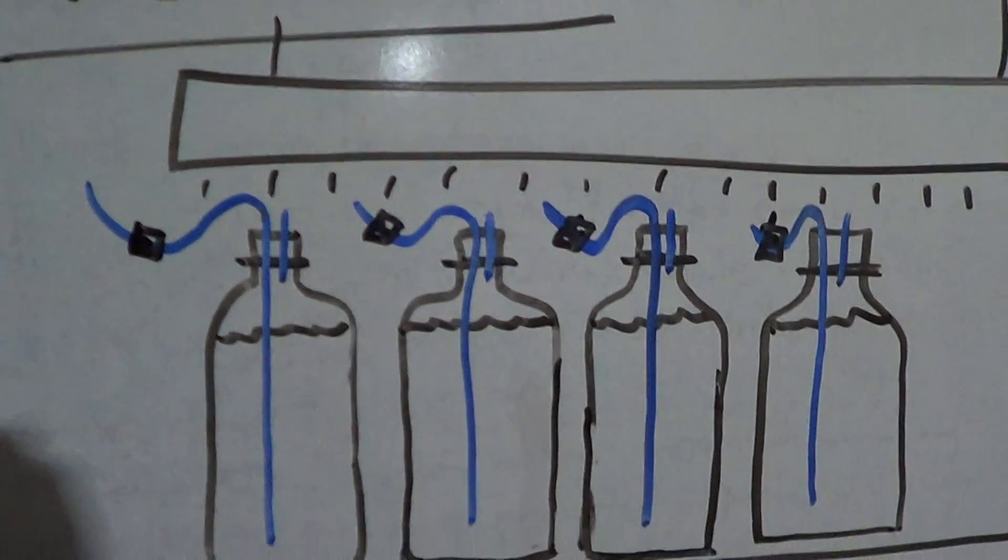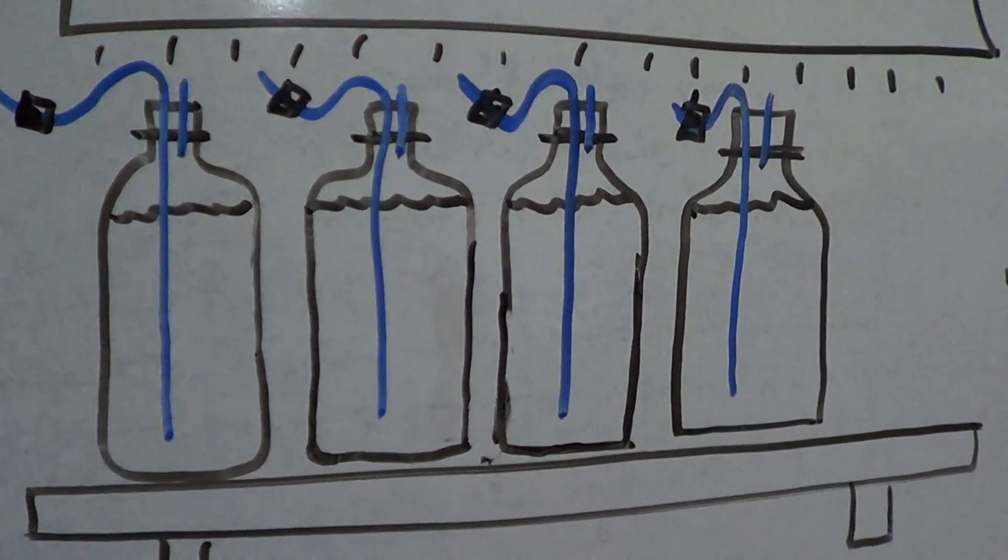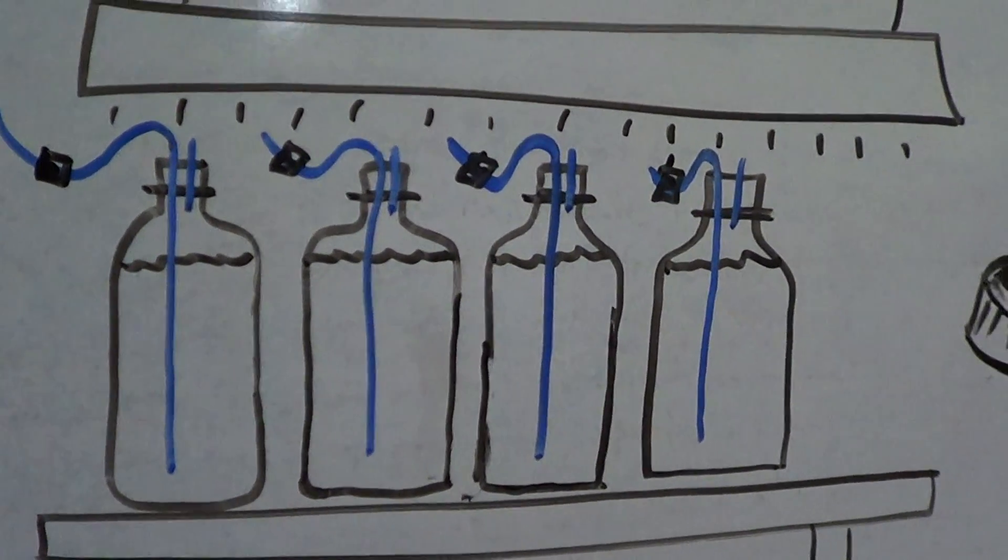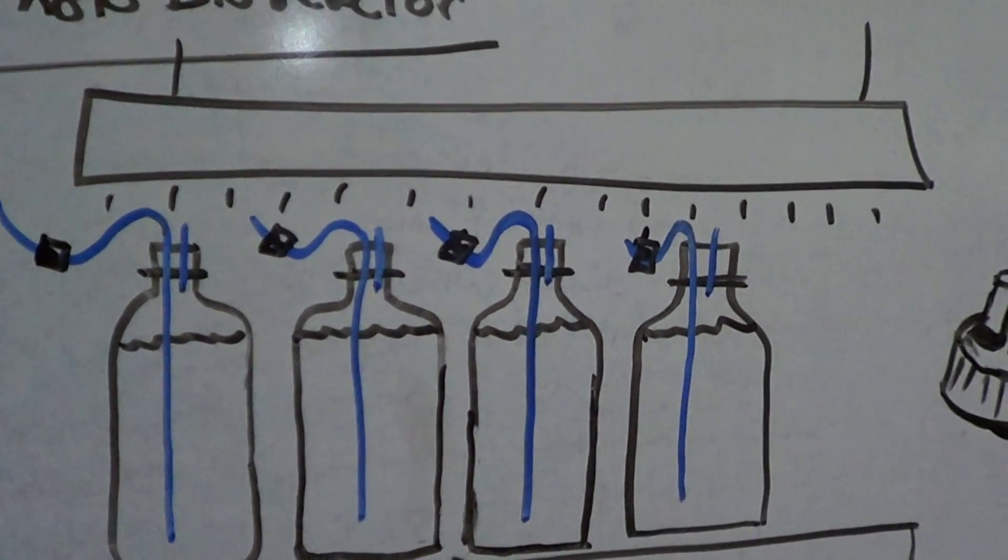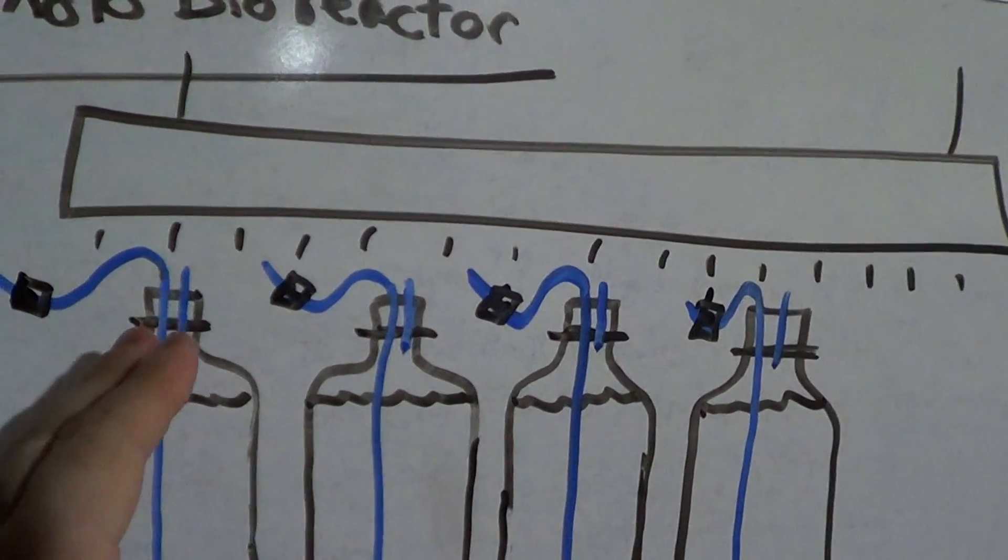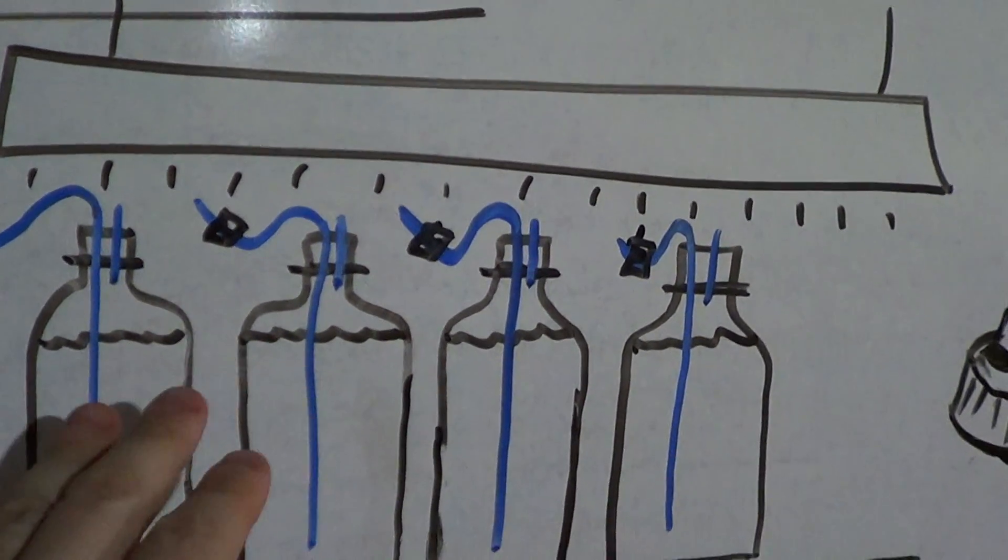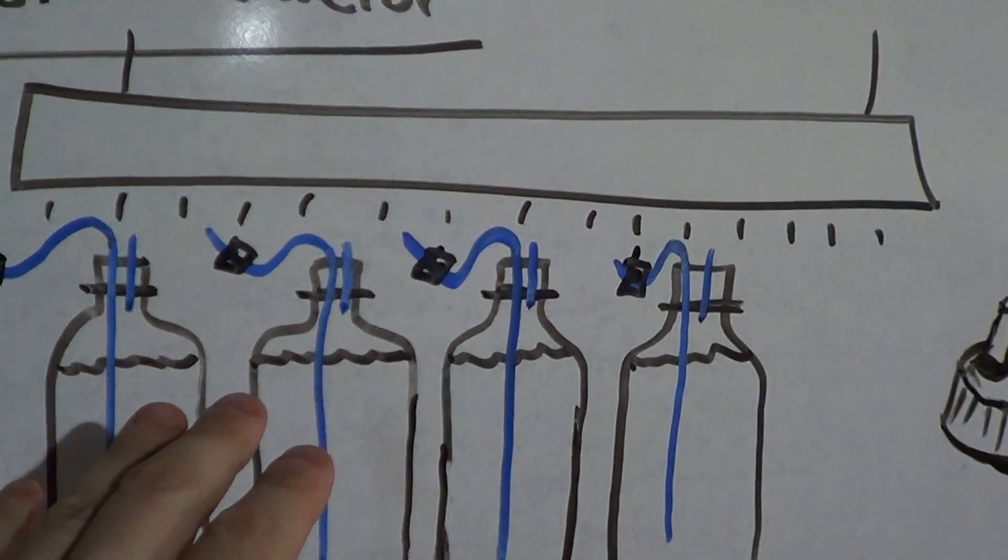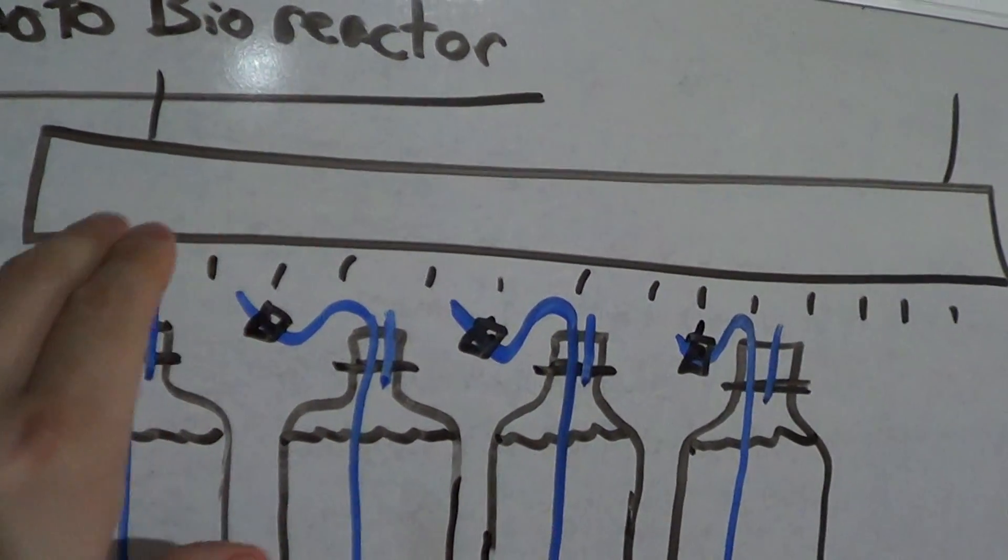that I need to build within the next day or two is a photo bioreactor. Basically, that's a system to grow algae. Very simple - it could be as complex as you want, but what I'm going to start with is very simple and very affordable. I'm going to take a shop light that I already